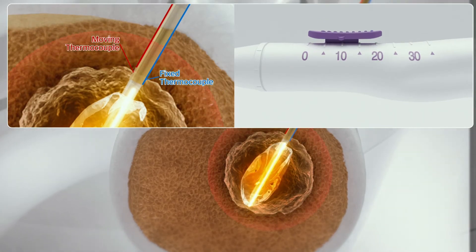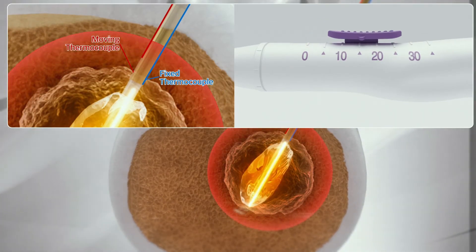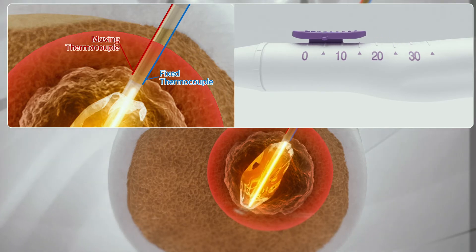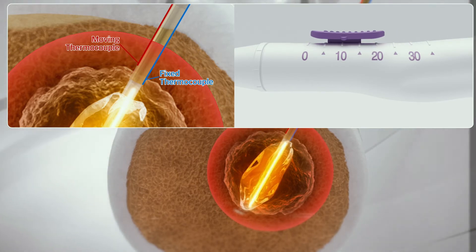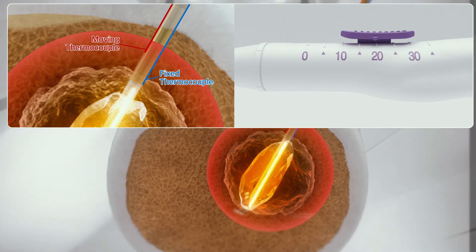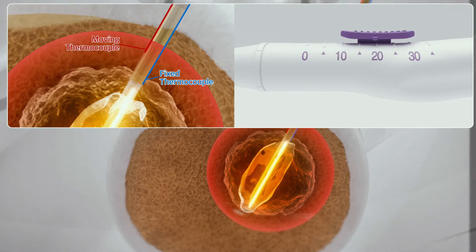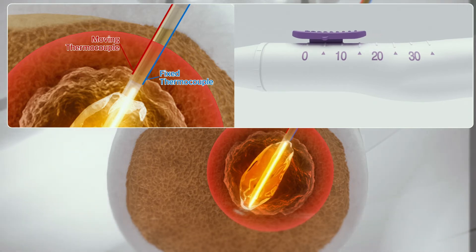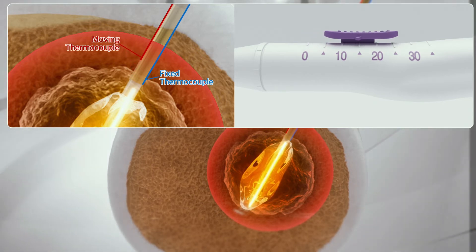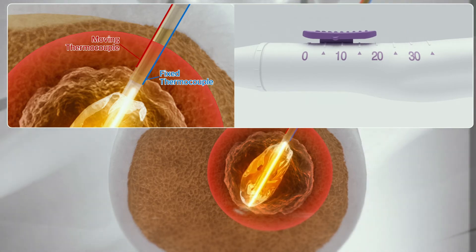The main advantage of the BMDT electrode is that it has two thermocouples: one fixed and the other movable. The fixed thermocouple measures the lesion temperature, while the moving thermocouple allows monitoring of thermal spread of the ablation in real time, including pedicle temperature and surrounding structures such as the nerve root and spinal cord. With these two thermocouples, you can perform ablation on bone metastases more safely.